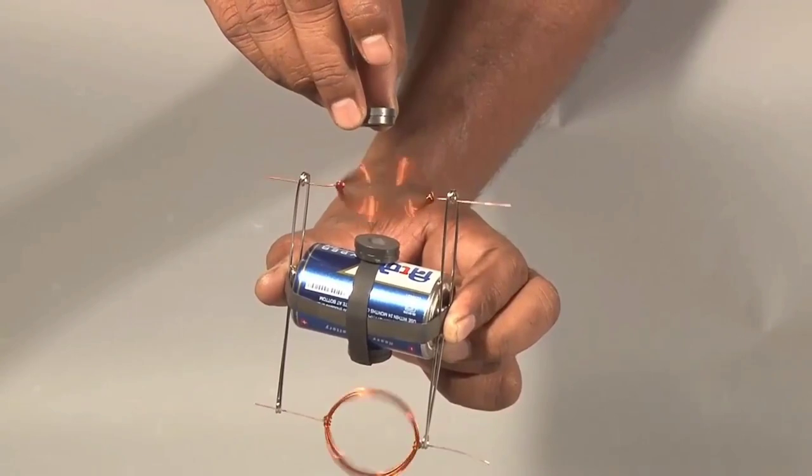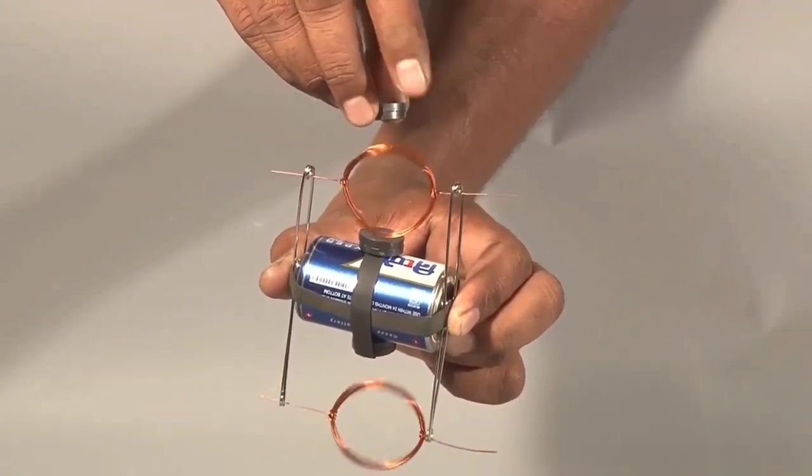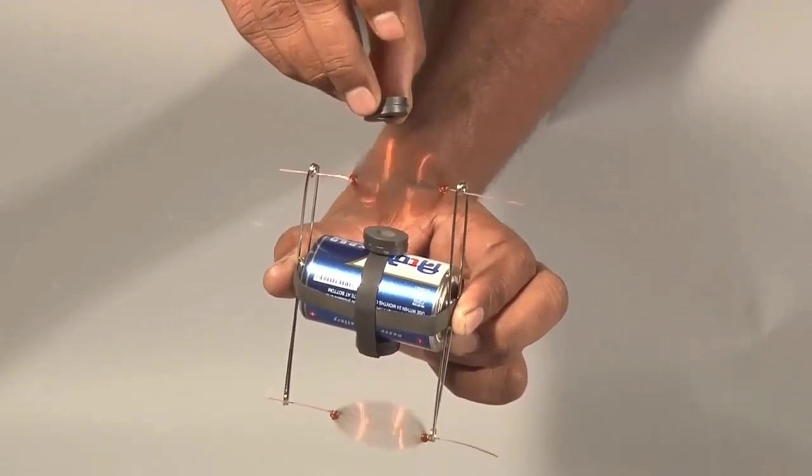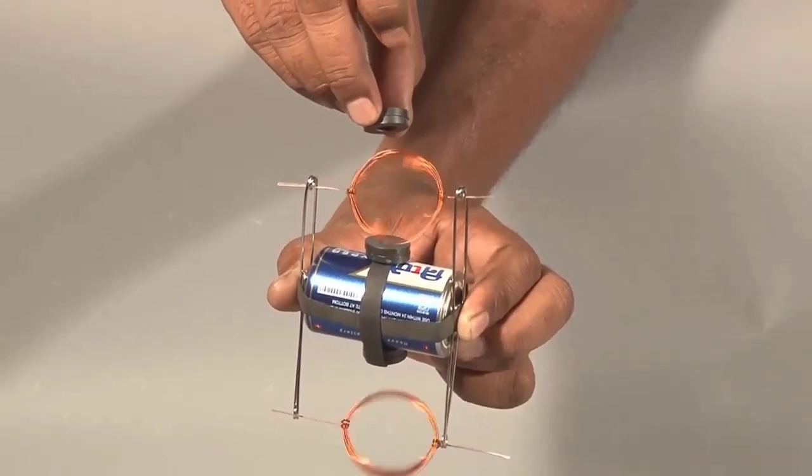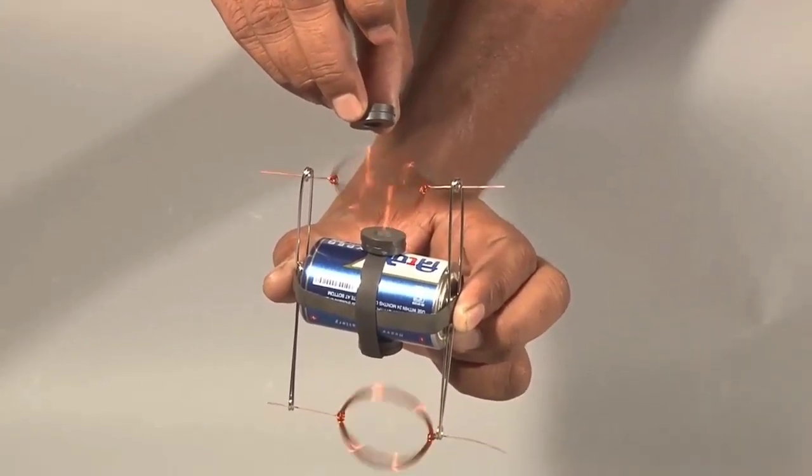The speed of this motor mainly depends on 3 important factors: the current passing through the coil, number of turns in the coil, and the strength of the magnet.